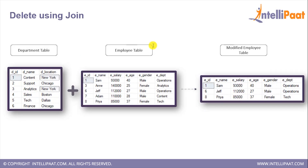Now let's understand how we can use DELETE with JOIN. From the employee table I'll be deleting those records where the department location is equal to New York. Since Content and Analytics are based in New York, we'll delete those two records from the employee table, so the final modified table will have no records where the department is either Content or Analytics.